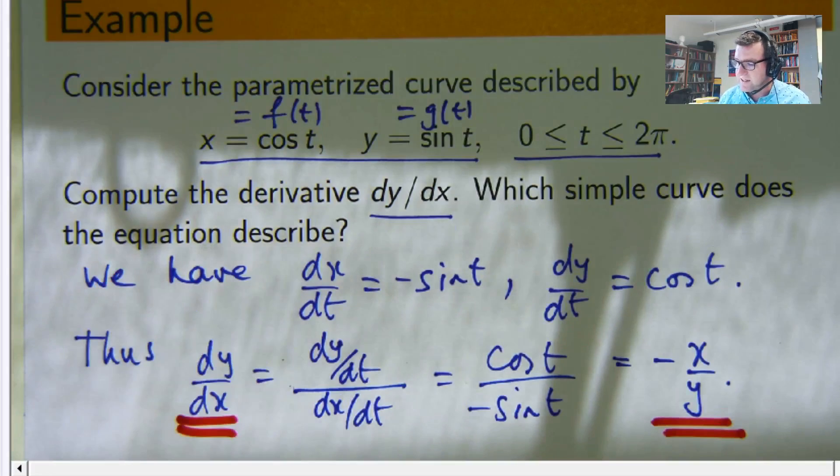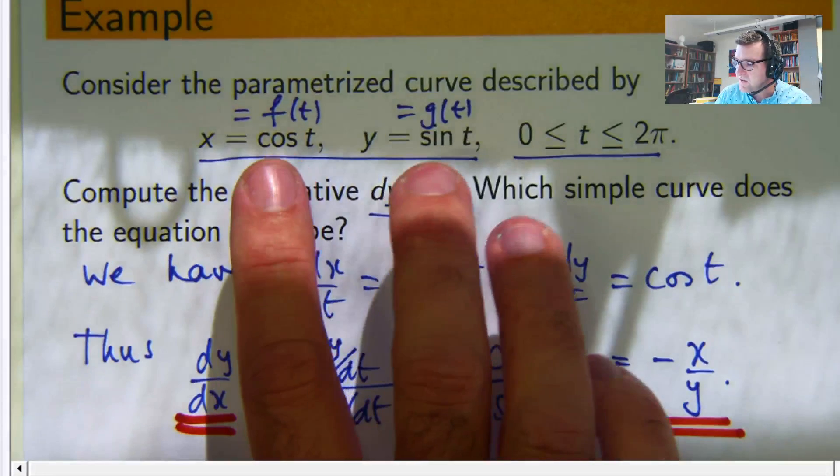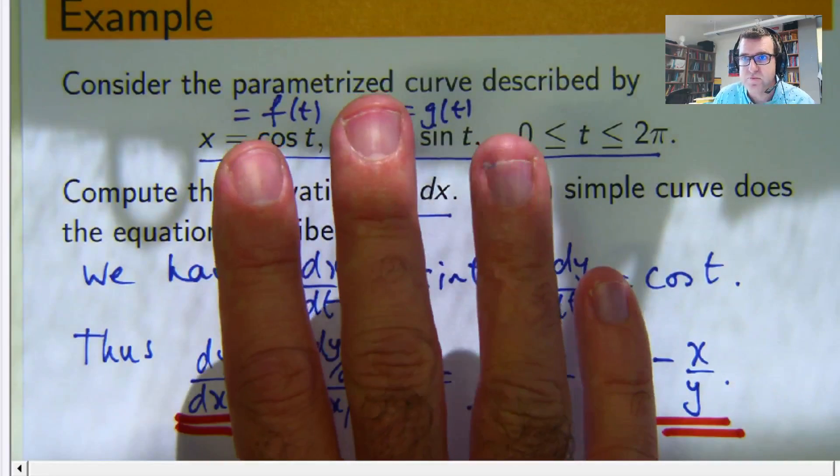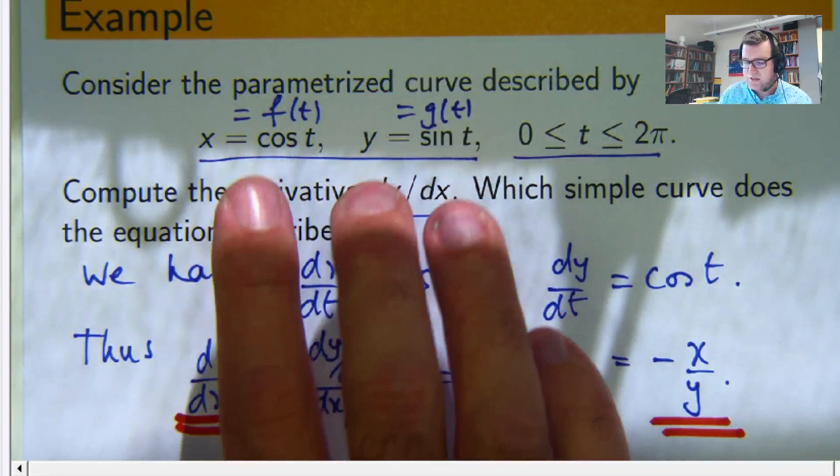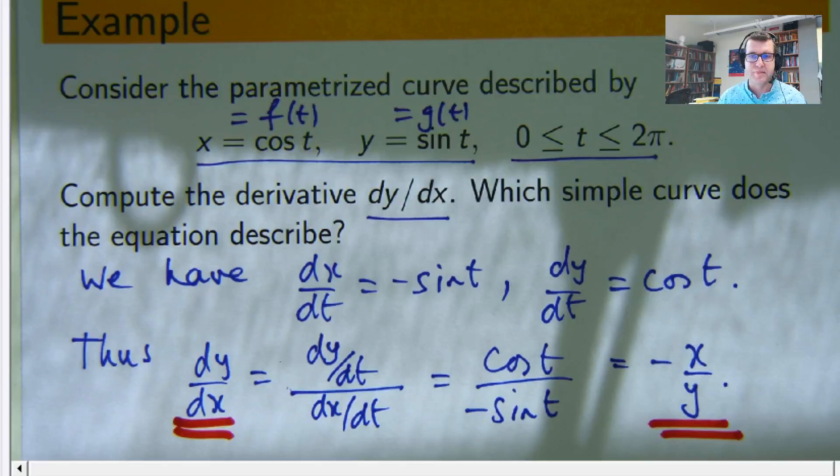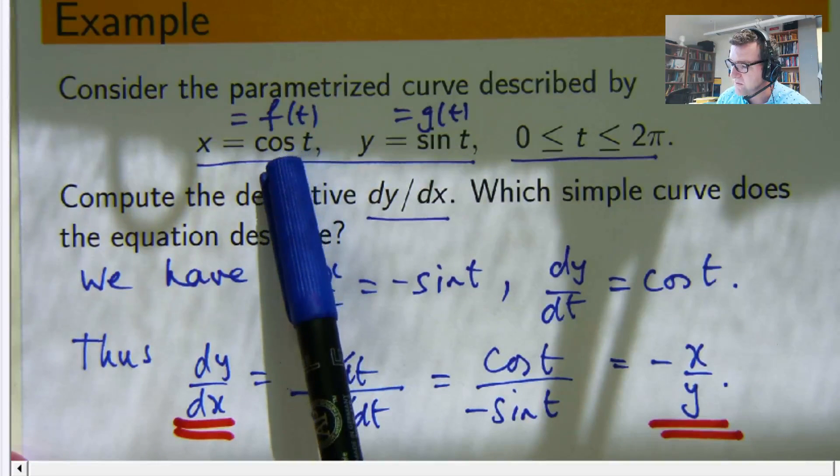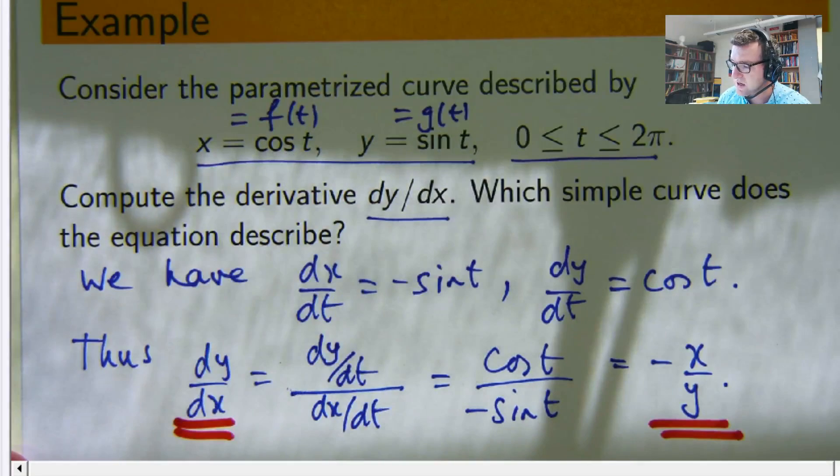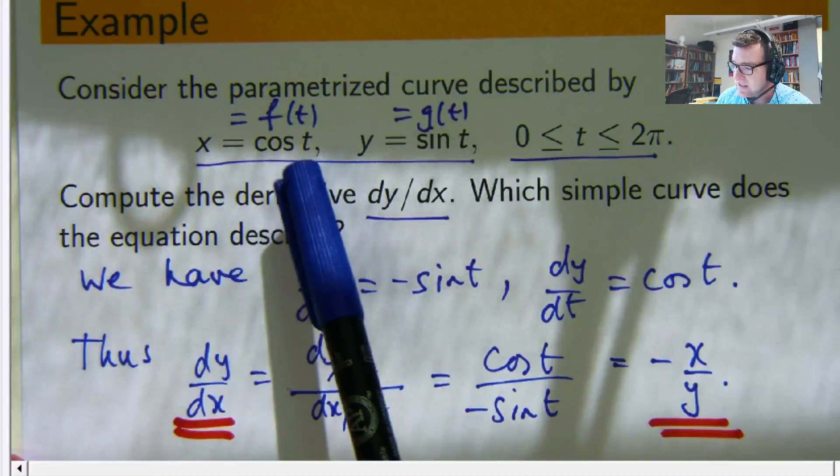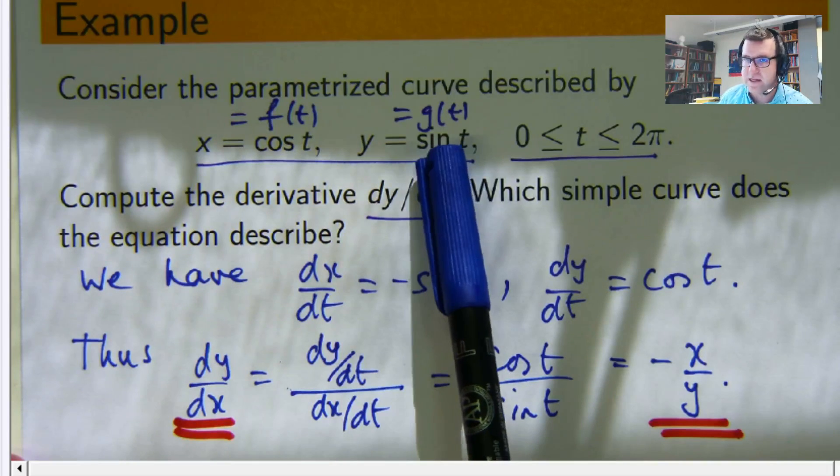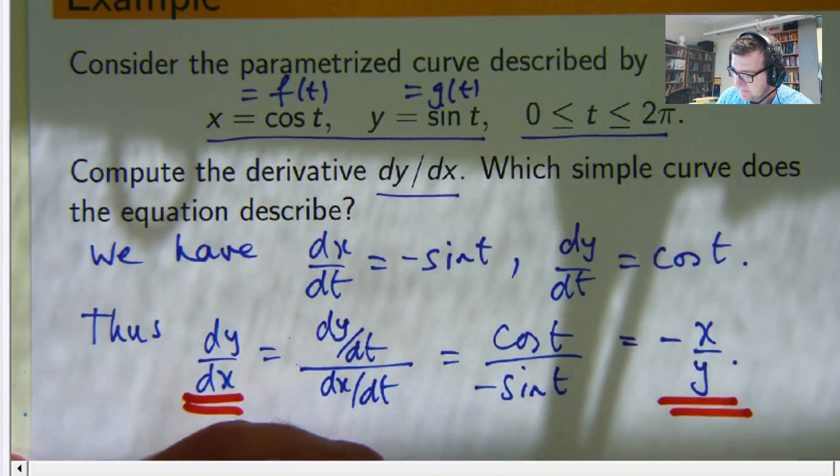The second part is which simple curve does the equation describe. So what we're trying to do is relate x and y to something familiar. We can, if you think about how can we relate cosine t and sine t, well one way is to use the old rule that cosine squared plus sine squared equals one.